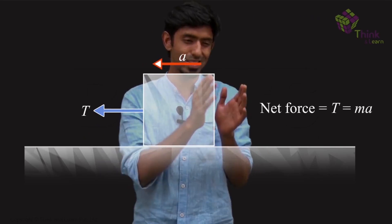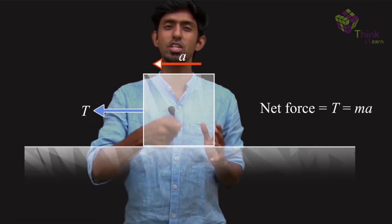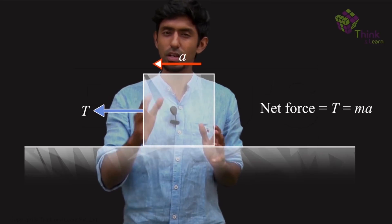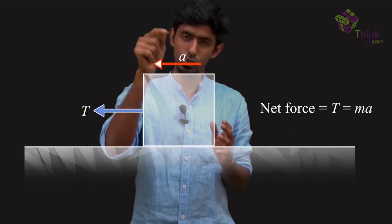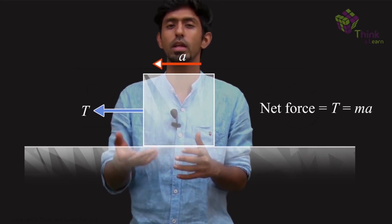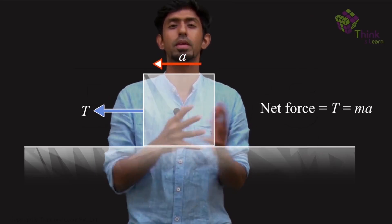Now whenever that force is by a string, we give it another name. We don't call it F, we call it T. What does this T stand for? Tension in the string. It's nothing different — it just means this particular force is by a rope or a string, not by something else.